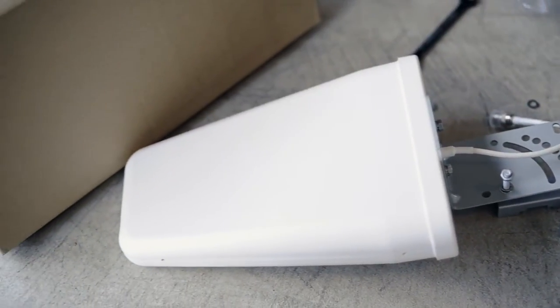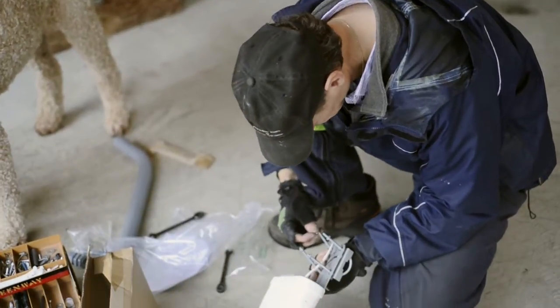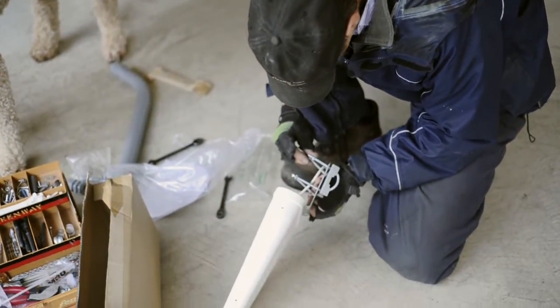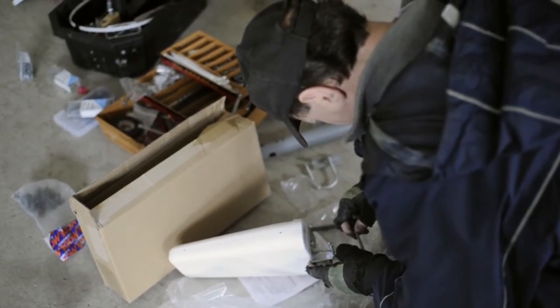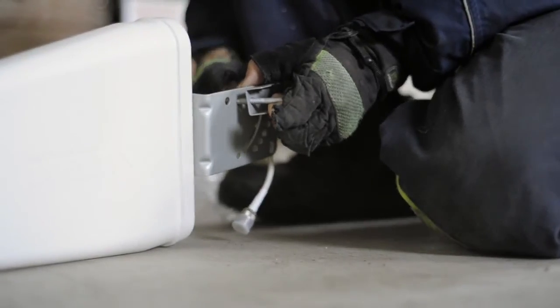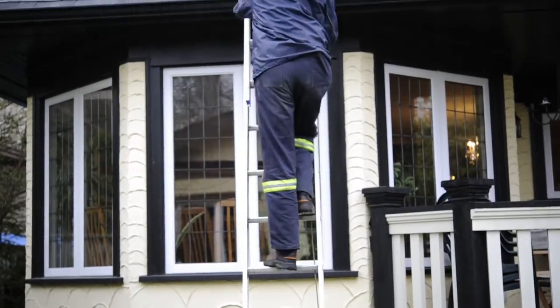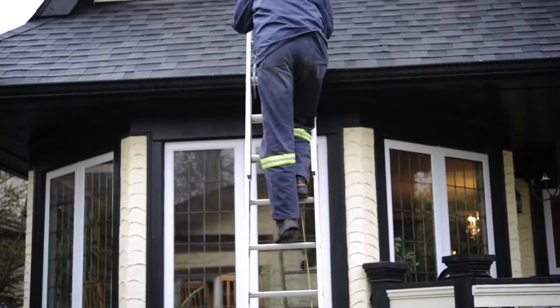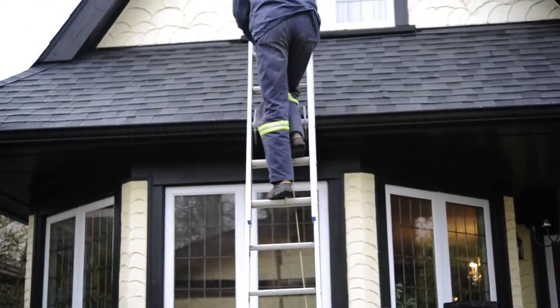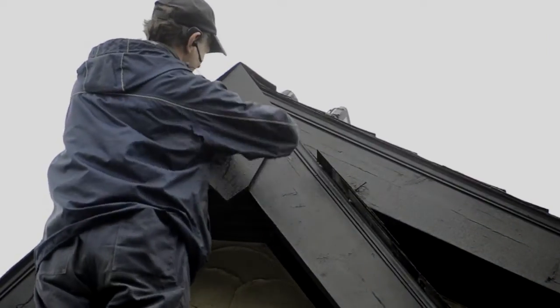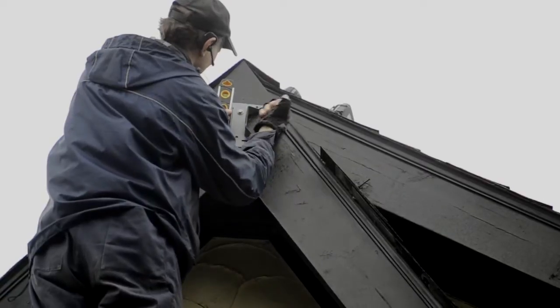The key to an effective Wilson amplifier installation is mounting your external antenna in a spot that sees the best signal. More signal coming into the amplifier is going to result in a larger coverage area on the inside, so the extra time and effort it takes to mount the antenna in the best spot is going to pay off.